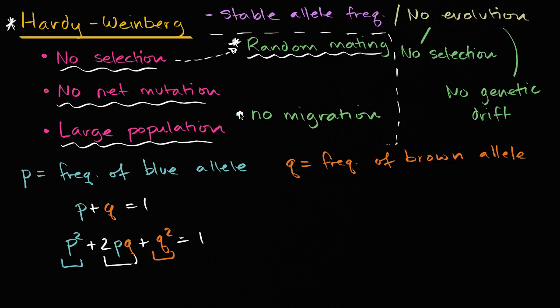Also, no migration, that the population isn't growing by other organisms entering it, or isn't shrinking by other organisms leaving, or there's not a mixing of population between two populations. Once again, it's all because we care about stable allele frequencies.